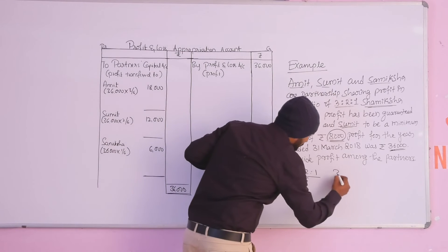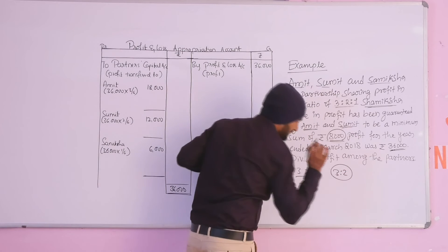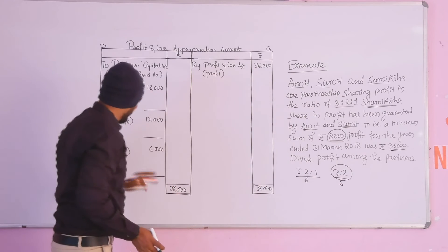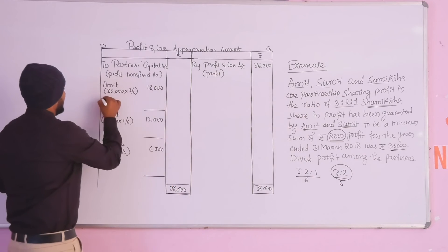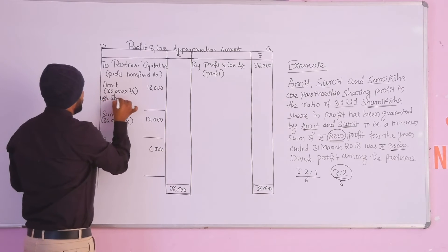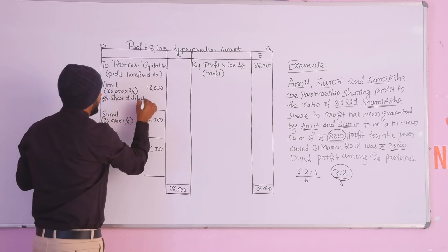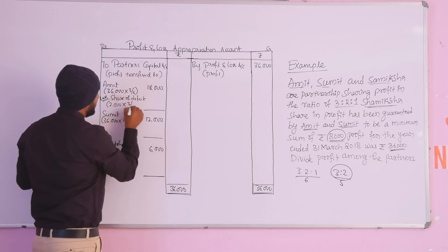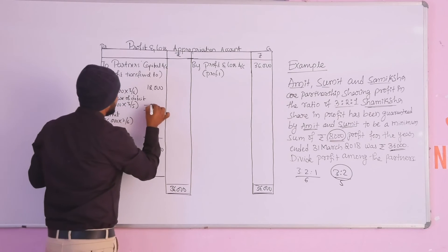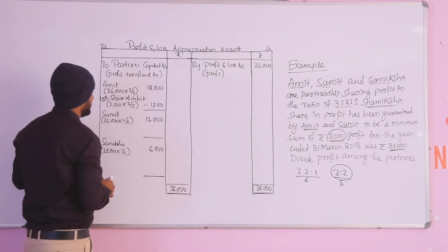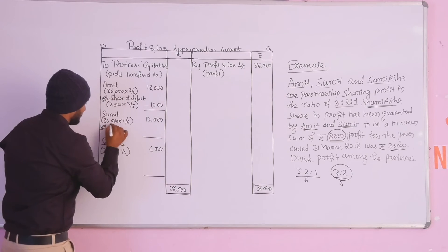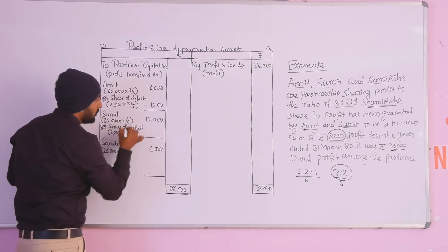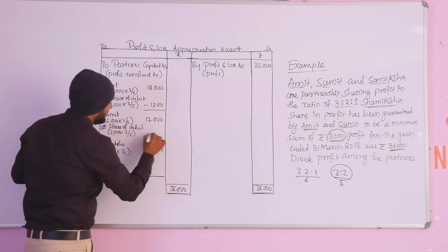Amit and Sumit's ratio is 3:2. So the total is 3+2 = 5. The deficit of 2,000 is to be recovered from Amit and Sumit in ratio 3:5 and 2:5. Amit's share of deficit: 2,000 × 3/5 = 1,200. Sumit's share of deficit: 2,000 × 2/5 = 800. So the deficit is recovered from both partners accordingly.